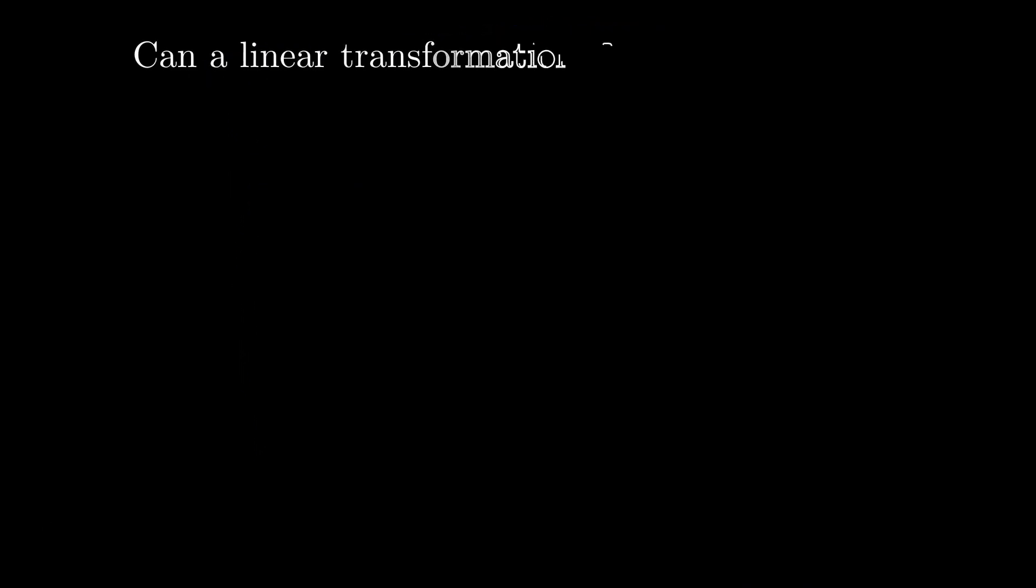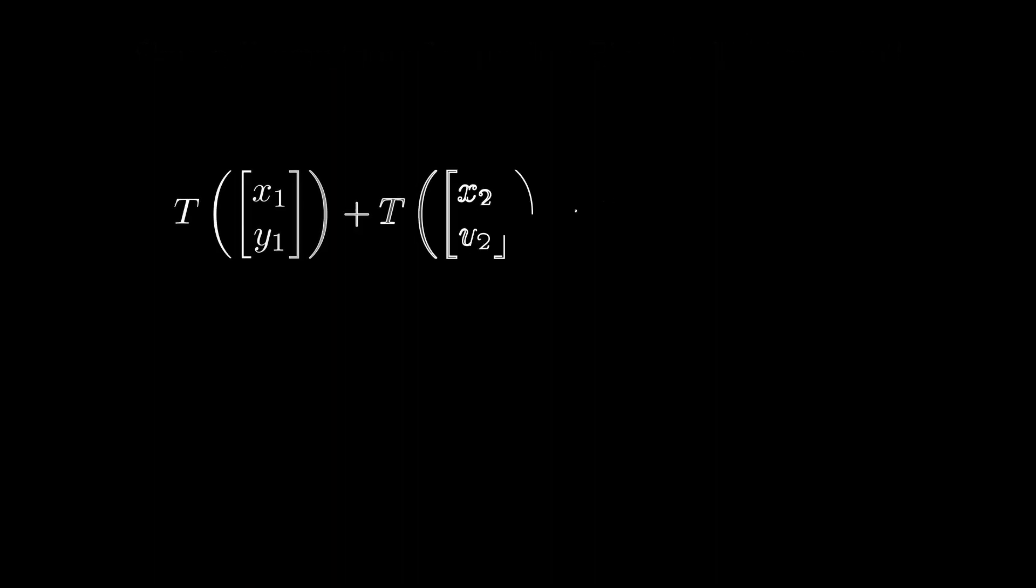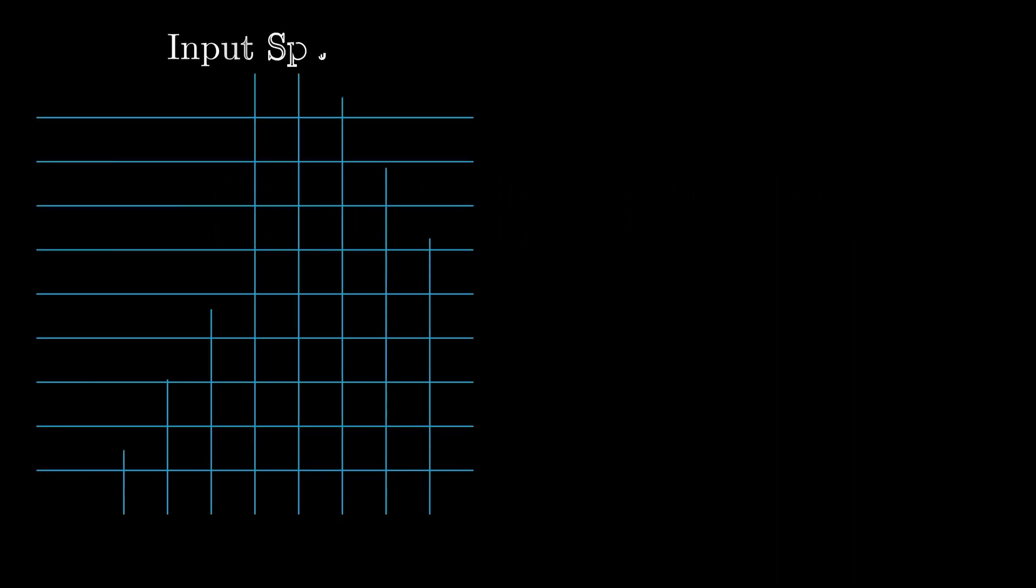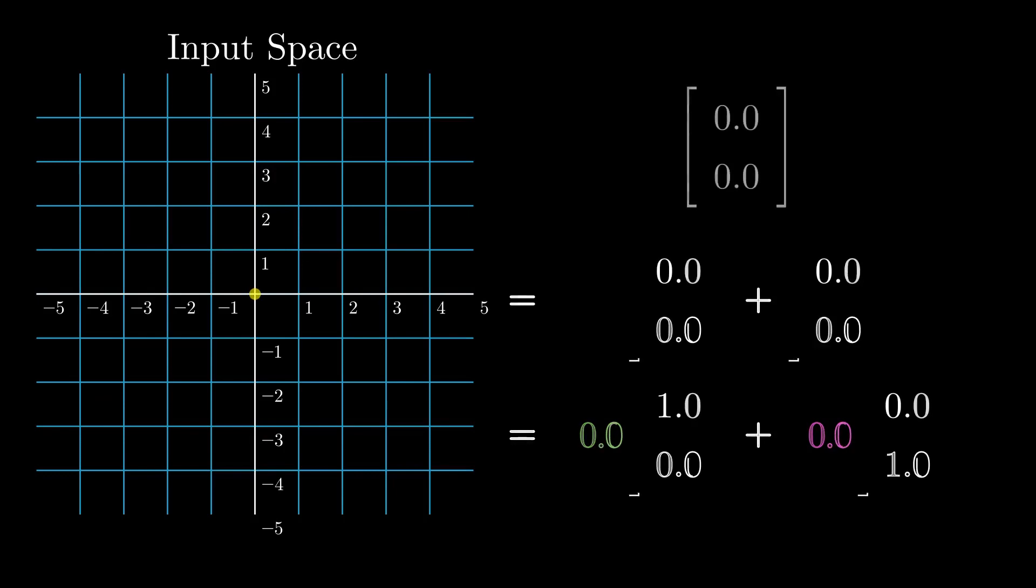But the question asks, can a linear transformation be onto? So what is a linear transformation? Well, formally, it's just a function that satisfies these two rules. But to understand the value of this simple constraint,